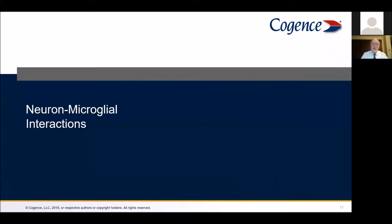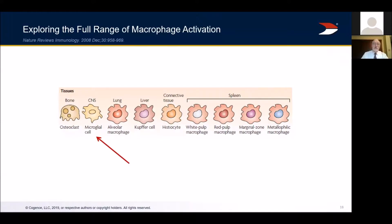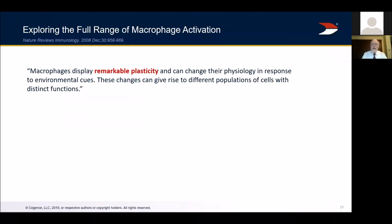Microglial cells are a specialized kind of macrophage — no different from other macrophages in their core being, but specialized for function in the brain. Macrophages display remarkable plasticity, meaning they can change how they function from cues in the tissue environment. Note: plasticity in immunology means flexibility — the ability to change physiology in response to environmental cues — whereas in neurology, plasticity means efficiency, where a neuronal pathway becomes stronger and more robust with use.